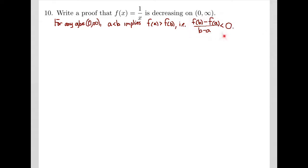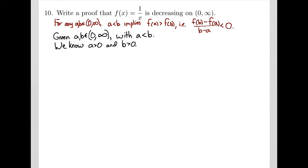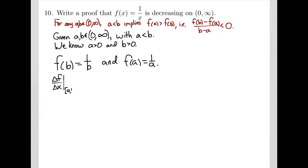This is equivalent to just looking at the slope. We'll calculate the slope between two arbitrary points and show that it's a negative number. We start by taking two numbers a and b in the interval — we know that they're both positive. Our function tells us that f of b equals 1 over b and f of a equals 1 over a. The average rate of change on the interval from a to b is simply the slope: f of b minus f of a, divided by b minus a.